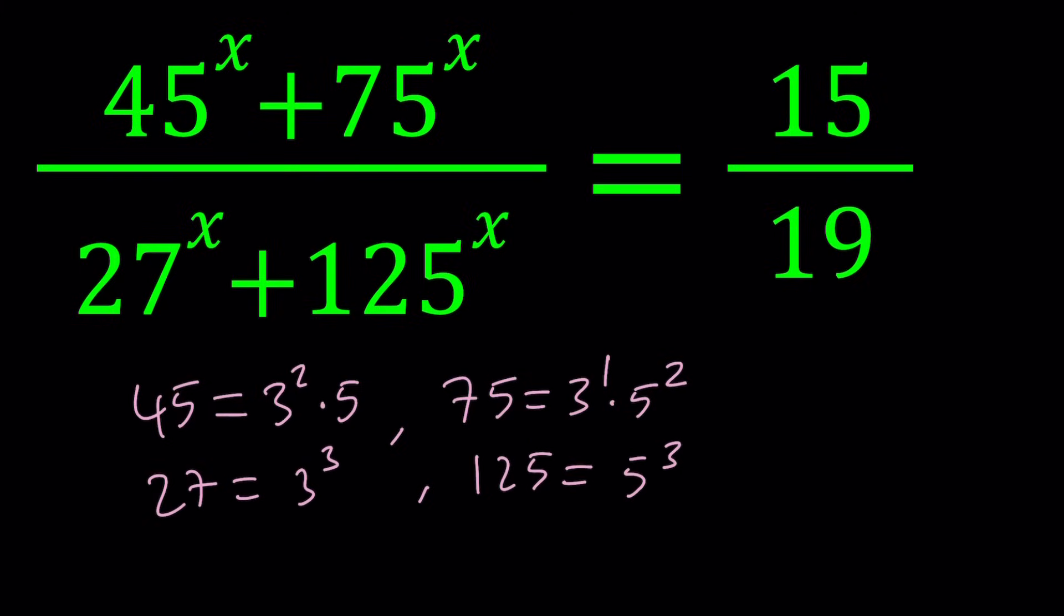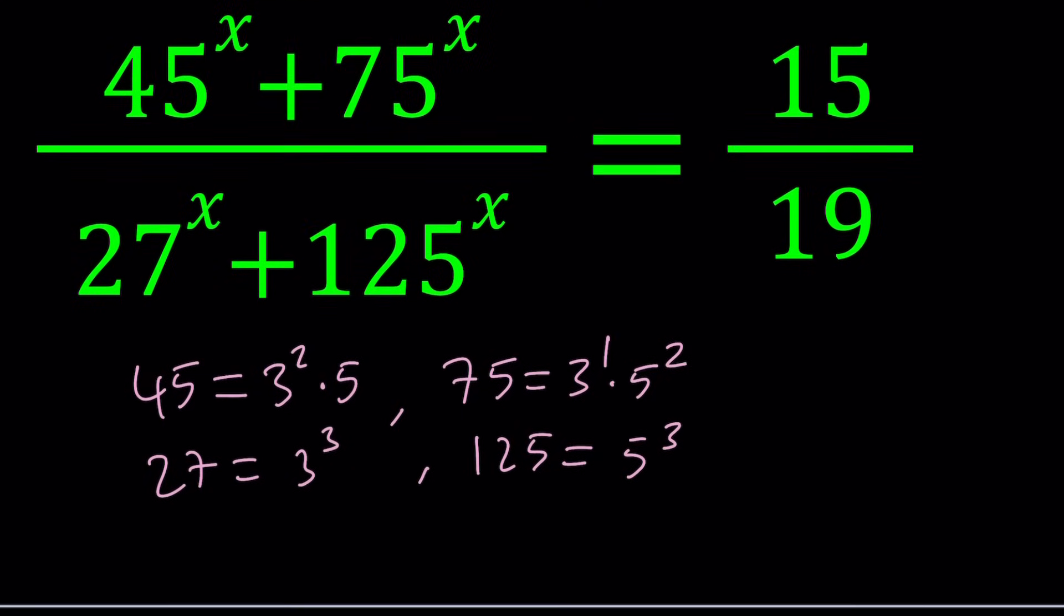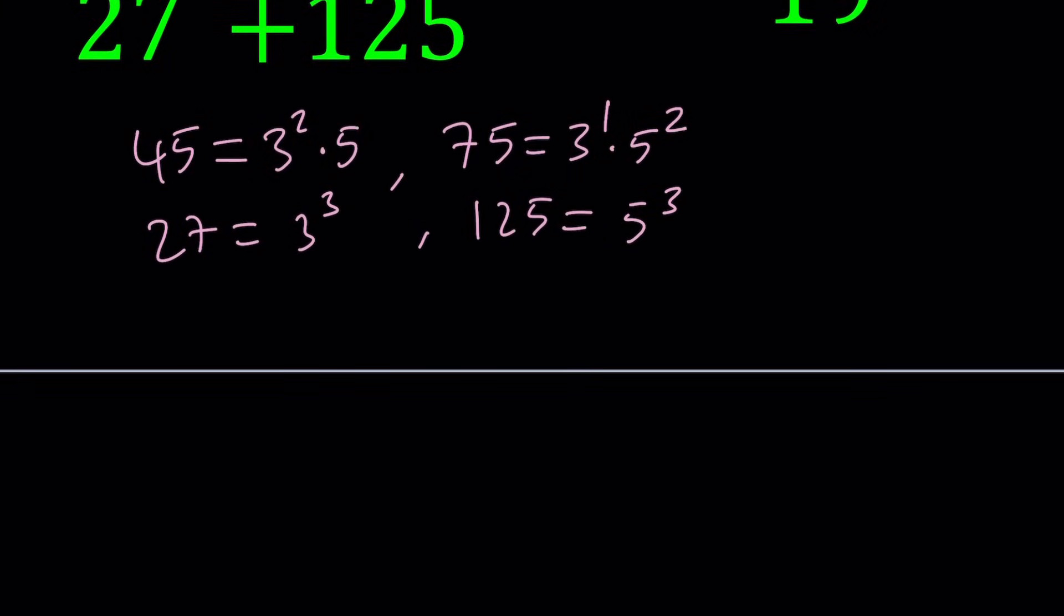As you can see, 3 and 5 are the only primes that we have to worry about. This tells us that we can use substitution, and substitution, as you know, is very powerful. Since we have x as exponent, let's go ahead and set 3 to the power x equal to a, and 5 to the power x equal to b.